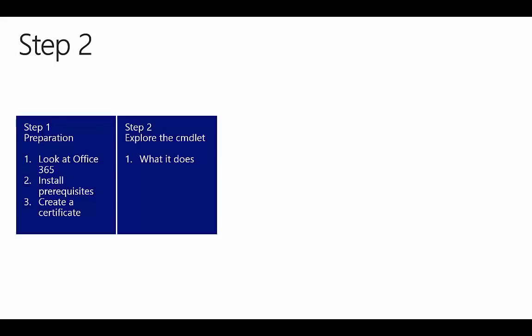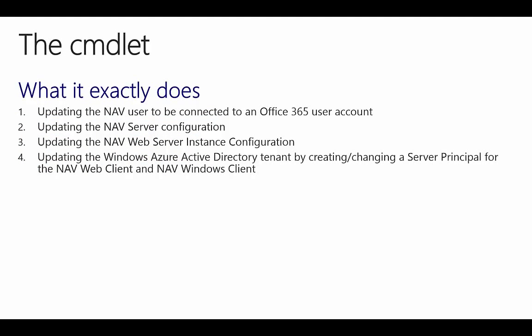Now we are ready with the preparation and can proceed to step 2: a look into the steps of the PowerShell script. The script performs configuration changes for the NAV server, the web server instance, and the Office 365 tenant to support single sign-on. It updates the NAV user with an Office 365 user account, updates the NAV server configuration and web server configuration to use Access Control Service, and finally connects to Azure Active Directory and configures it for both the NAV web client and Windows client.